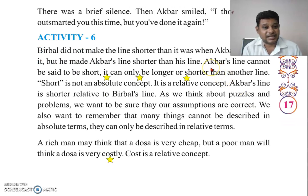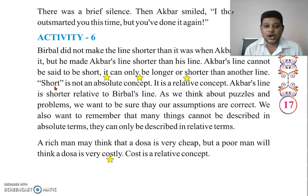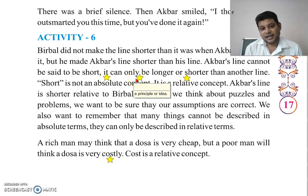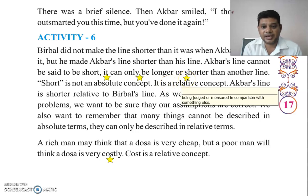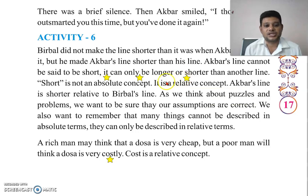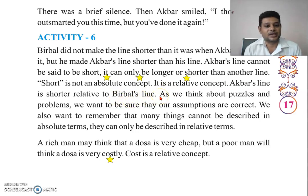Whatever shorter than his line — Akbar's line cannot be said to be short in absolute terms; it can only be described as longer or shorter than another line. जो अकबर की line है उसे हम short line नहीं कहेंगे — हम कहेंगे कि दूसरी line से उनकी line छोटी है। यहाँ short is not an absolute concept — absolute means not changing. यहाँ Akbar's line is shorter relative to Birbal's line.